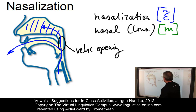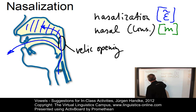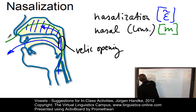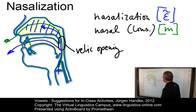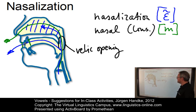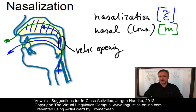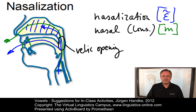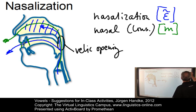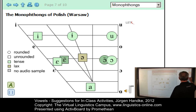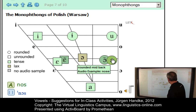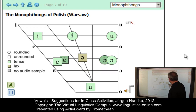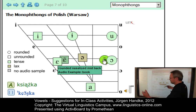Nasal consonants, in contrast to nasalized vowels, use an airstream that not only uses the nose but passes through it, and the airstream in the mouth is blocked — in our case between the lips, as in 'amma', or 'anna'. For exemplification, I suggest you use the VLC language index and illustrate nasalization on the basis of a language such as Polish: compare the oral vowel in 'nos' with its nasalized counterpart in 'książka'.